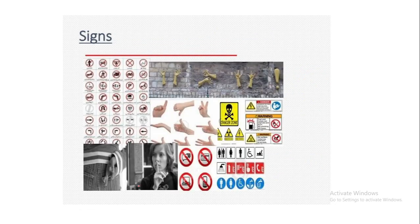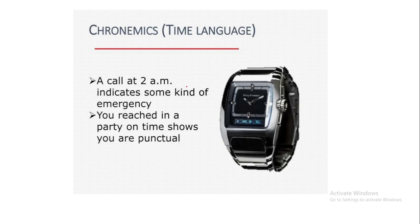Signs are also very important. Here you can see traffic signs and some hand movements. These things are prohibited. Here we have signs for restrooms, washrooms, for disabled people, for washing hands, and for drinking water. Here the person is saying 'keep quiet' or 'be quiet.' With signs we can convey a lot of meanings.